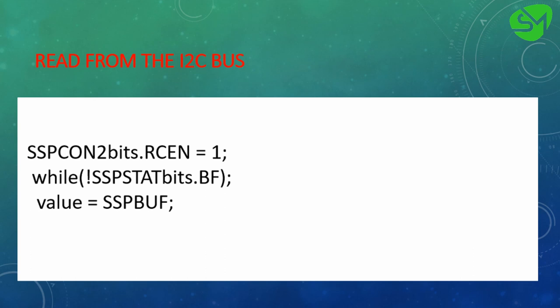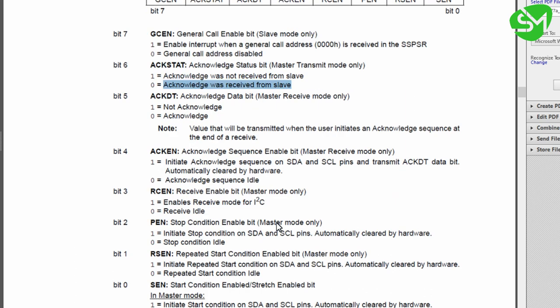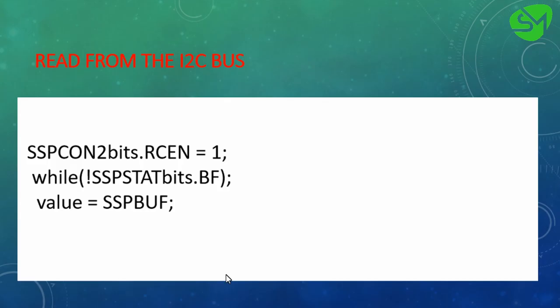For reading data from the I2C bus, we implement three lines. We enable the RCIN bit from the SSPCON2 register — this is the receive enable bit for the master. We then wait for the BF bit from the SSPSTAT register to go high, which indicates the I2C data buffer is filled with data. After that, we load the data from SSPBuf — the buffer register holding the I2C data — into a variable called value. That covers the programming sequences for implementing the I2C bus on the PIC16F877A.